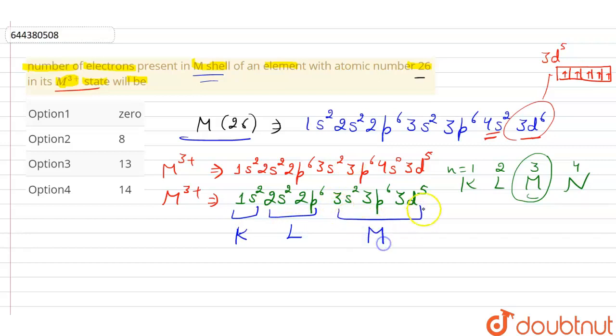Now electrons in K shell is 2 electrons, in the L shell it is 6 plus 2, that is 8 electrons. In M shell it is 2 plus 6 plus 5. Therefore, the question asked us the number of electrons present in M shell. The number of electrons present in M shell is 13.